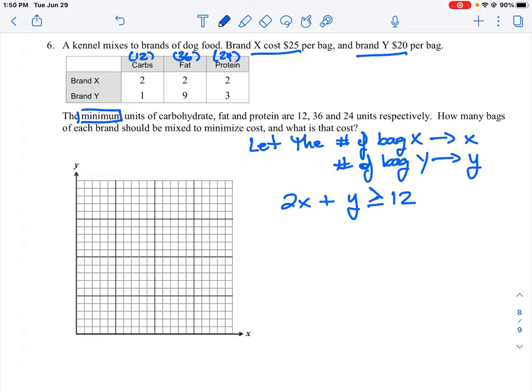And then for the fat is the same thing, we're going to go 2 times X, because it's 2 units of fat per bag of X, plus 9 times Y, because there's 9 units of fat per bag of Y, and we have to have a minimum of at least 36. And then the minimum for the other one here is 2 units of protein, which times X, the number of bags of brand X, plus 3 units times Y, and our minimum is going to be 24 units of protein. So these produce the equations that we are going to be graphing at this point here.